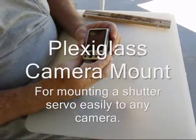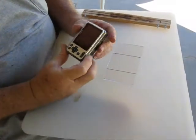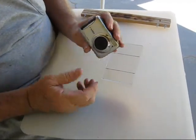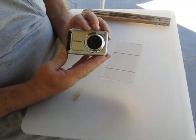I will be constructing a camera mount for a Canon A495. The mount is being created to have a solid base for a shutter servo to be mounted.